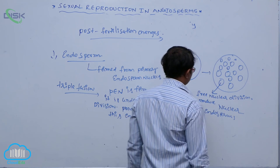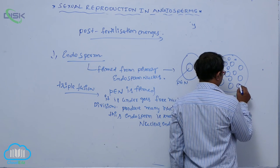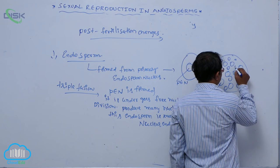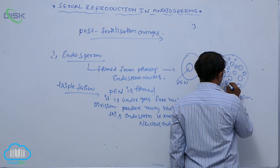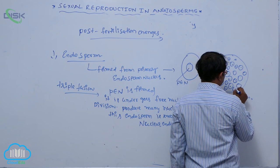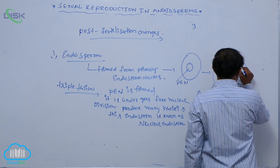So after that, cell wall formation is from the periphery to the center. This is where all the nuclei are. So this cell wall formation is from the periphery to the center.